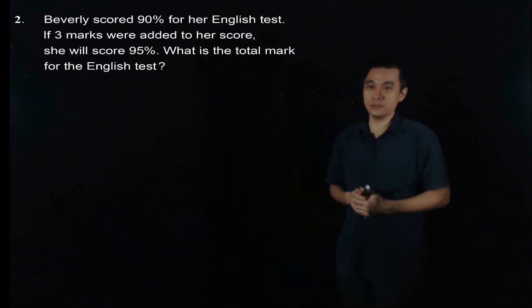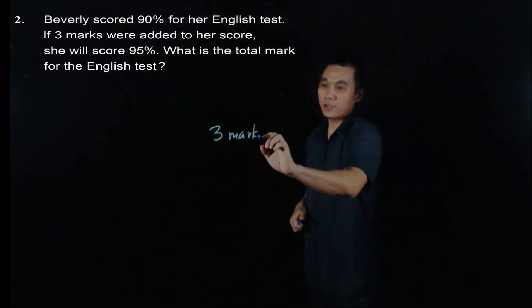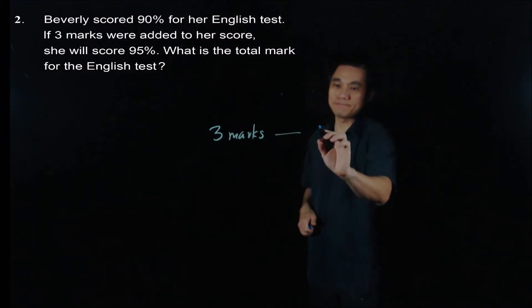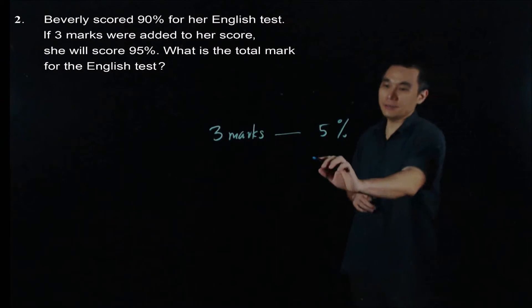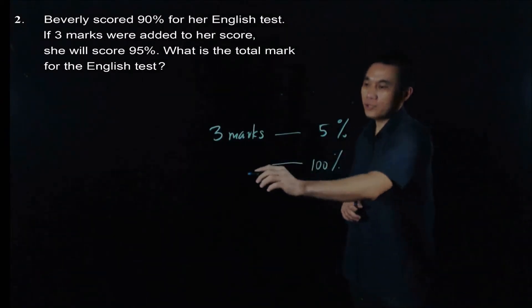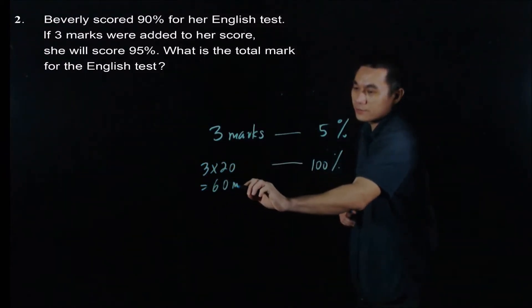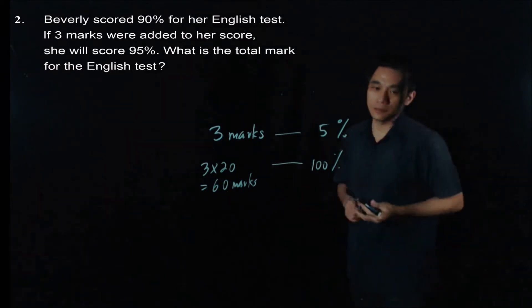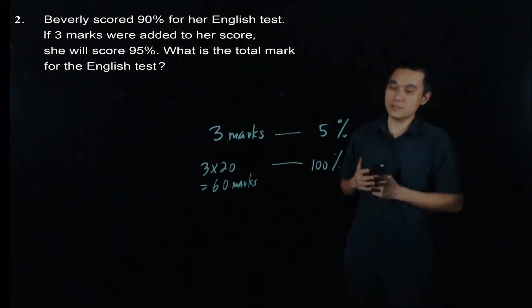From the question, we know that 3 marks contribute 5%. So in order to get 100%, we need to just multiply it by 20. So 3 times 20, and you have this is 60 marks. And we are done. So the total marks for the English test is 60.